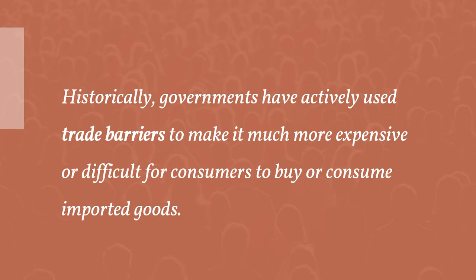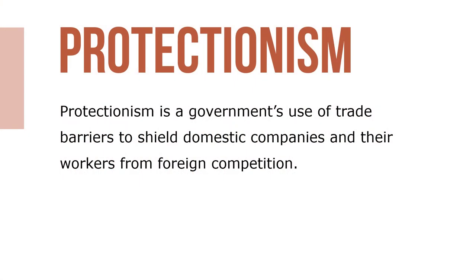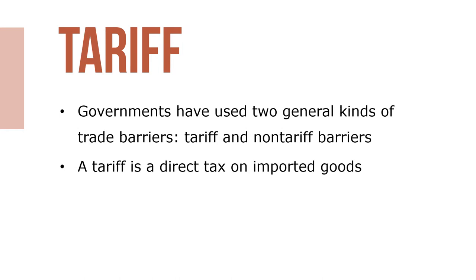Historically, governments have actively used trade barriers to make it much more expensive, difficult, or sometimes impossible for customers to buy or consume imported goods. Protectionism is a government's use of trade barriers to shield domestic companies and their workers from foreign competition. Governments have used two general kinds of trade barriers — tariff and non-tariff barriers. A tariff is a direct tax imposed on imported goods, increasing the cost of imported goods relative to domestic goods. For example, Argentina's import tax on electric products is 35%.